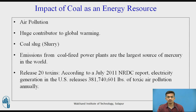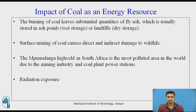Emissions from coal-fired power plants are the largest source of mercury in the world. Coal also releases over 20 toxins. According to the NRDC report, electricity generation in the U.S. releases about 3,870,400,000 pounds of toxic air pollution annually.